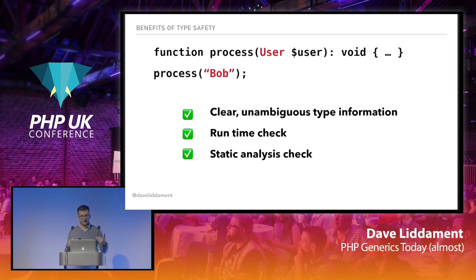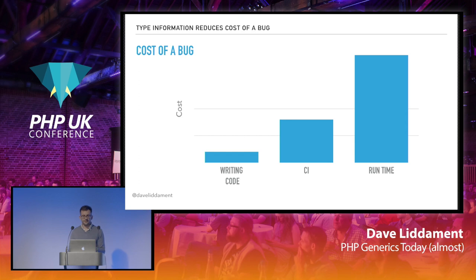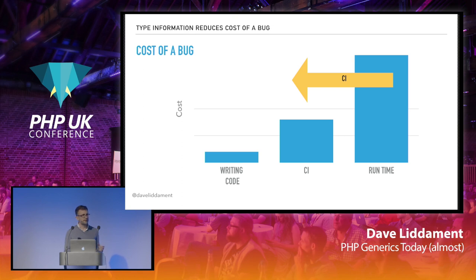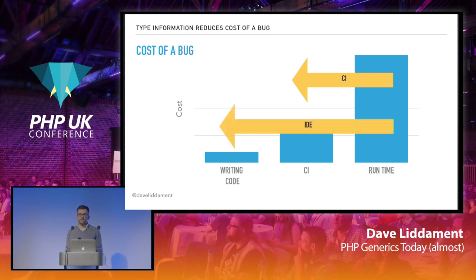Static analysis is another major benefit. If we think of the cost of a bug, generally the later we find a bug, the more costly it is. So if we have continuous integration running some kind of static analysis tool, it could potentially find a whole class of type errors at CI time. And better still, if we have an IDE providing real-time static analysis, it can tell us about mistakes as we're writing them.